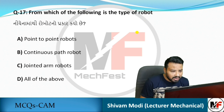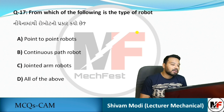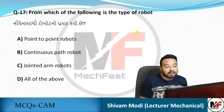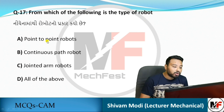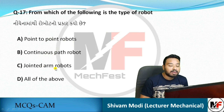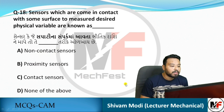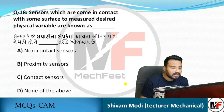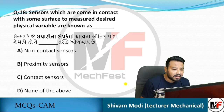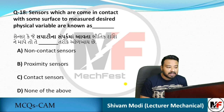Next question: which of the following is a type of robot? Options include point-to-point robot, continuous path robot, and joint arm robot. All of these are types of robots, so the answer is all of the above.